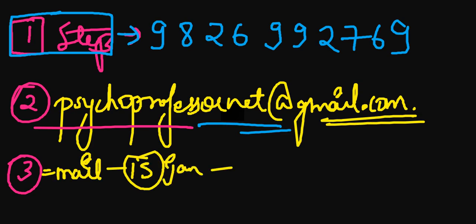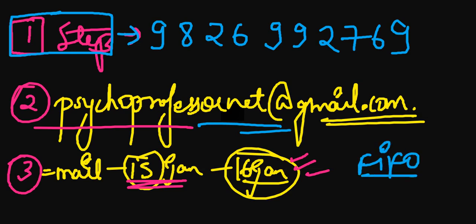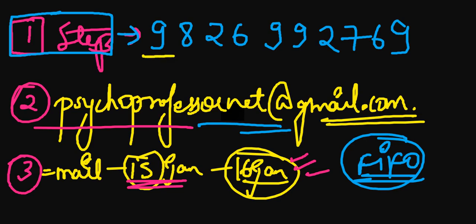Delivery will continue through 15th and 16th January. It works on a first-in, first-out basis — the earlier you order, the earlier in the queue you are, and the sooner you receive the PDF. If you don't want to receive it late on the 16th night, order early to get it on the 15th morning itself.